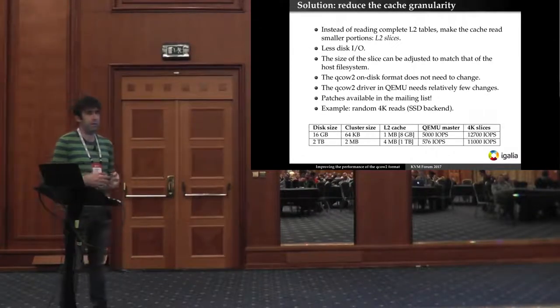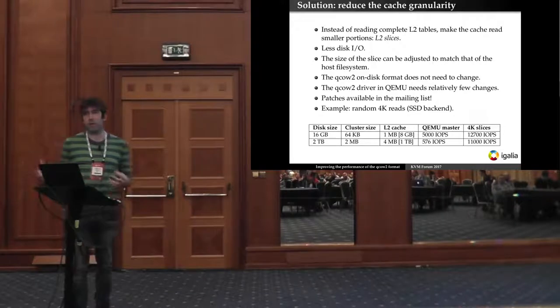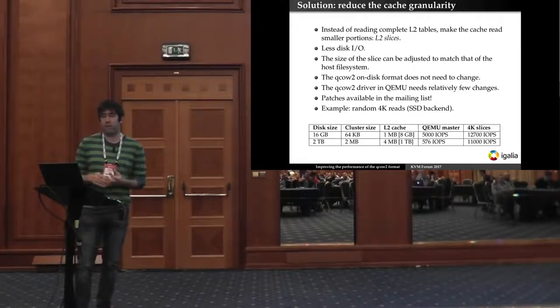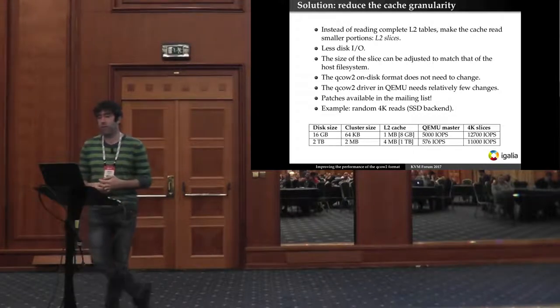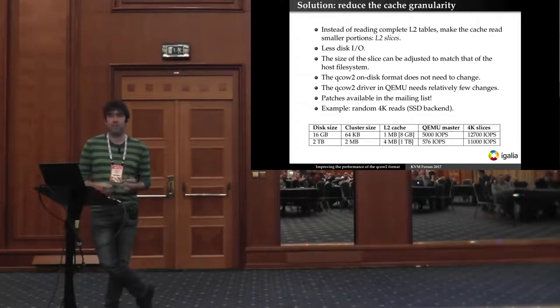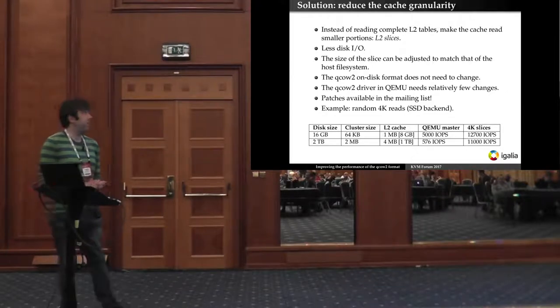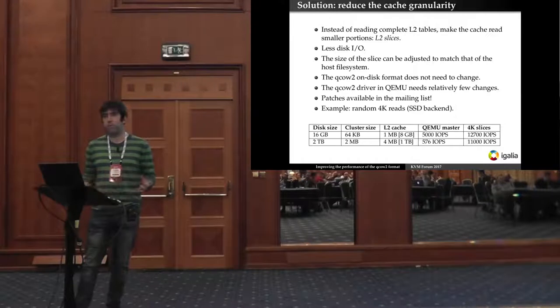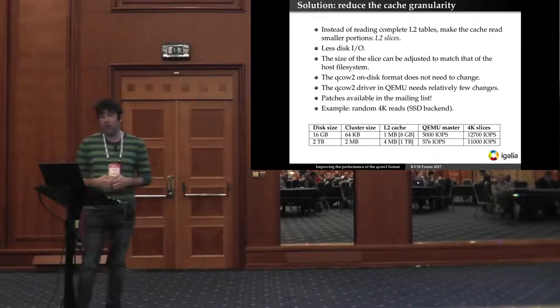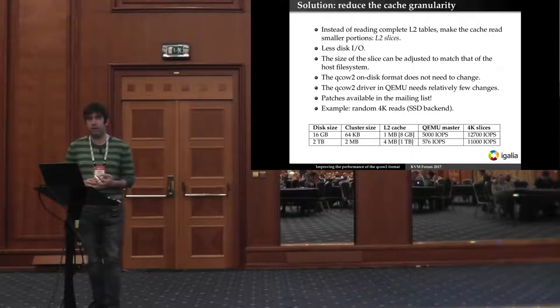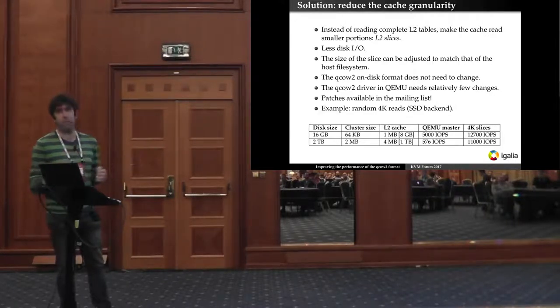This can be solved easily by reducing the cache granularity. So the cache in QEMU as I said reads and writes complete L2 tables but there's no need to do that. Instead of reading complete tables we can make the cache read slices. So it will be like smaller portions of the tables that will only contain less information and that will be enough for our needs. This involves this means that we would have less disk I/O. Also the size of the slice can be adjusted so it would match the host file system. The benefit of this is that the on disk format of QCOW2 doesn't need to change. The QCOW2 format itself doesn't know about slices. This is a purely internal parameter of the QCOW2 driver. The driver itself of course needs changes but it needs relatively few changes and there's already patches available in the mailing list.